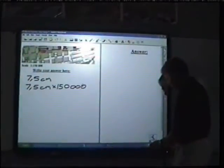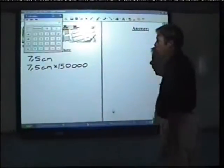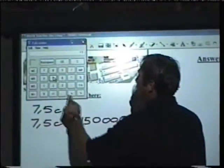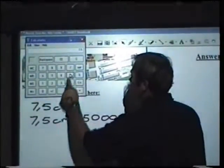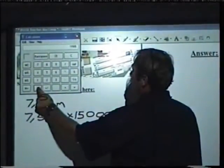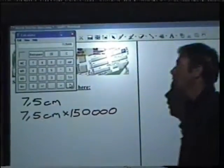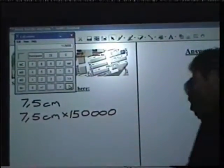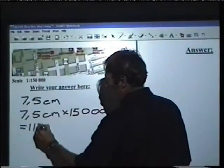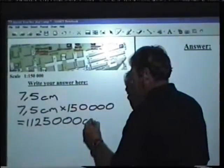And that would be equal to 1,125,000. They can use the calculator which is available from the smart tools to do these calculations. And then 7.5 cm multiplied by 150,000 equals 1,125,000. So they can then write their answer which is 1,125,000 cm.